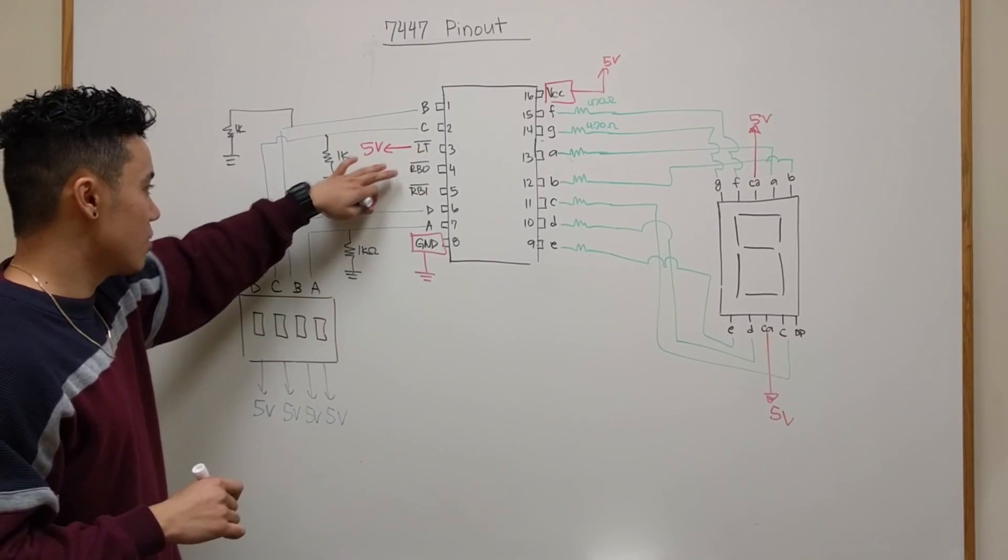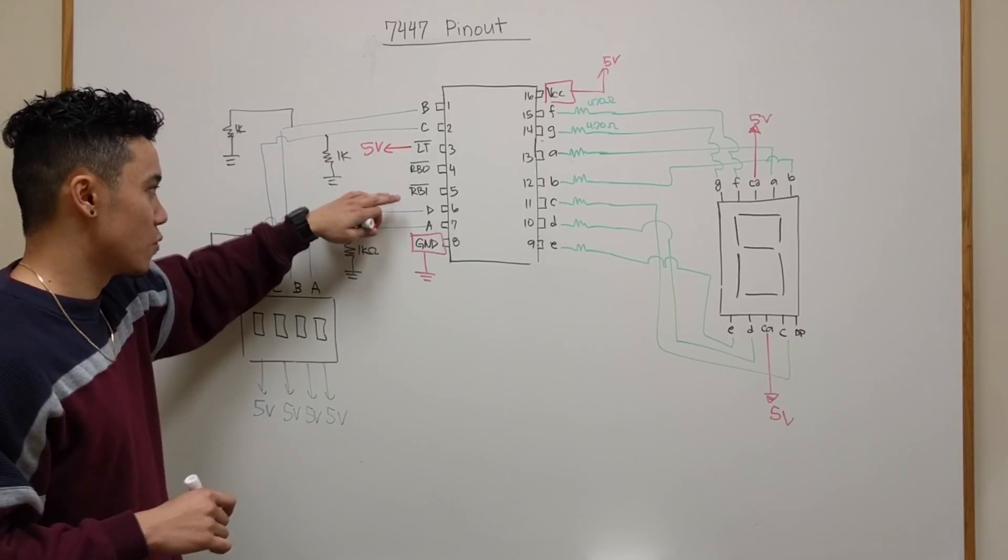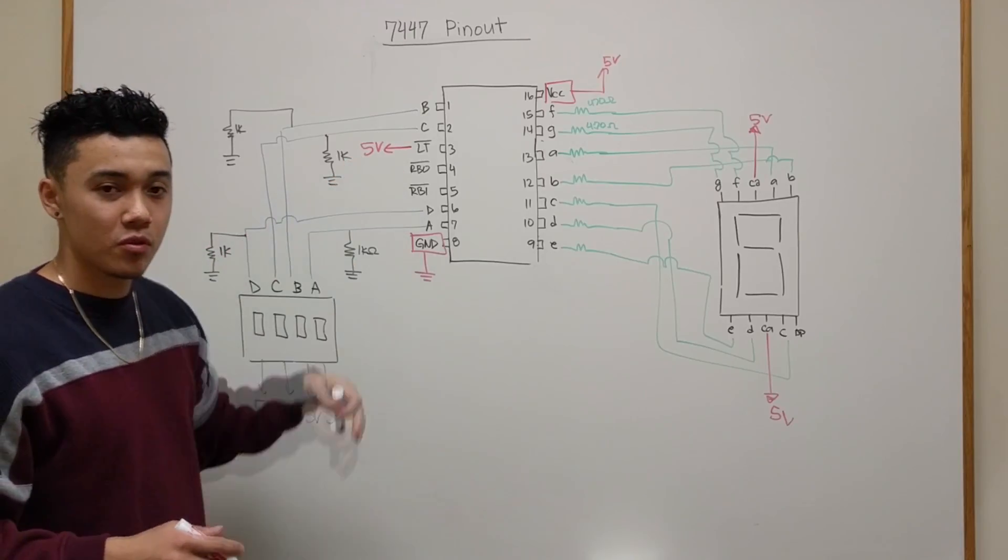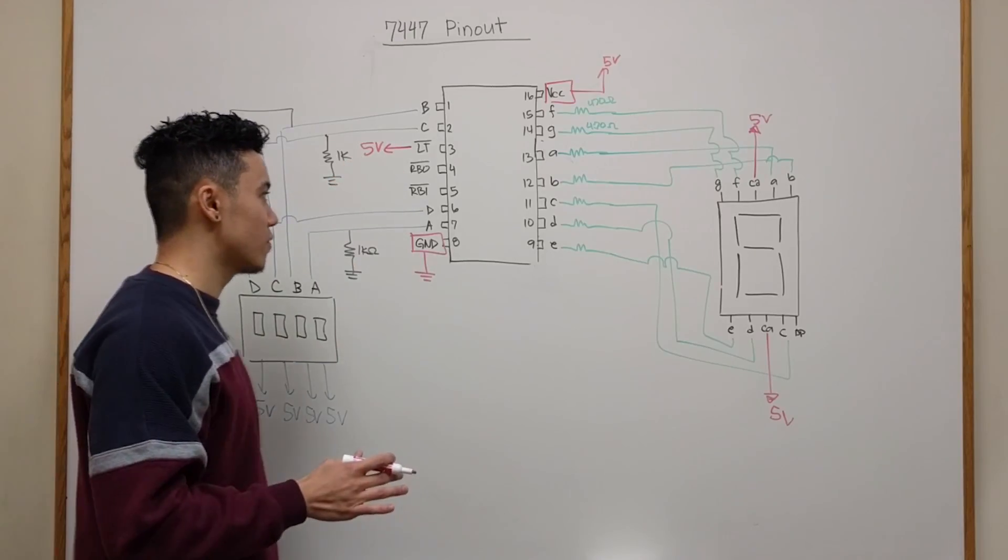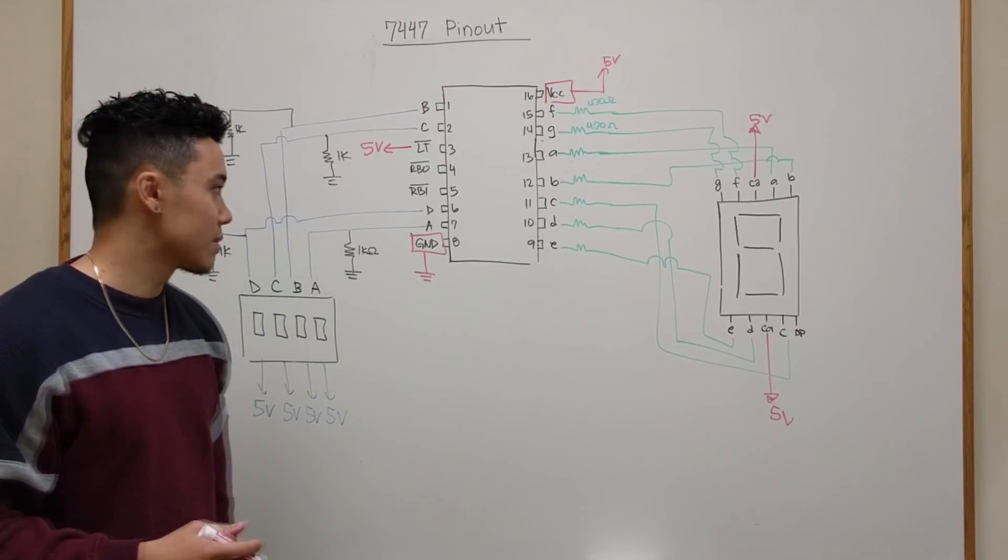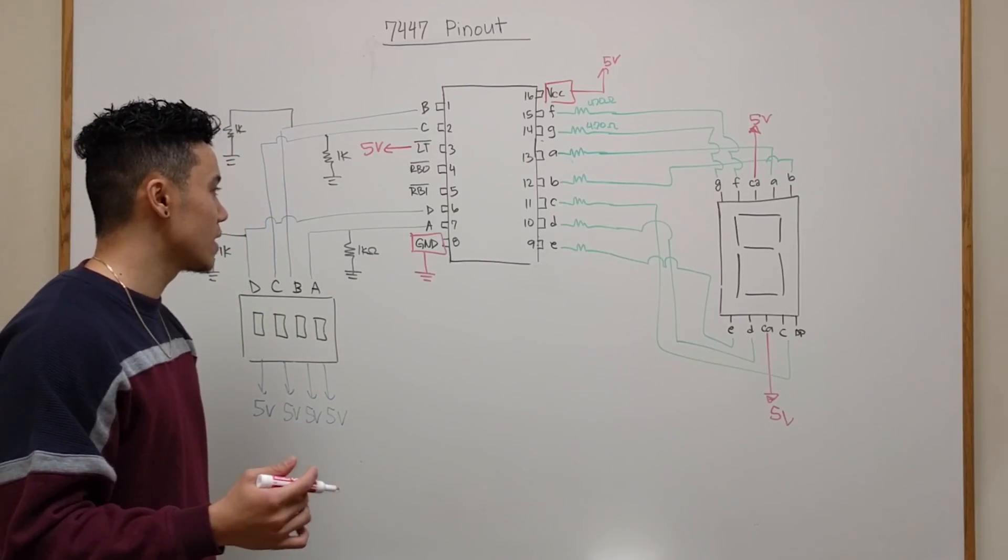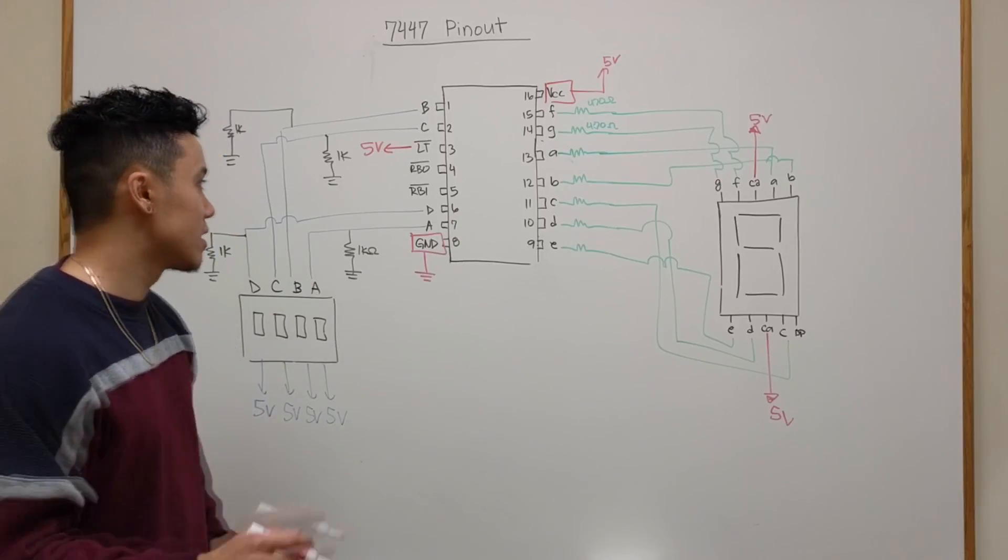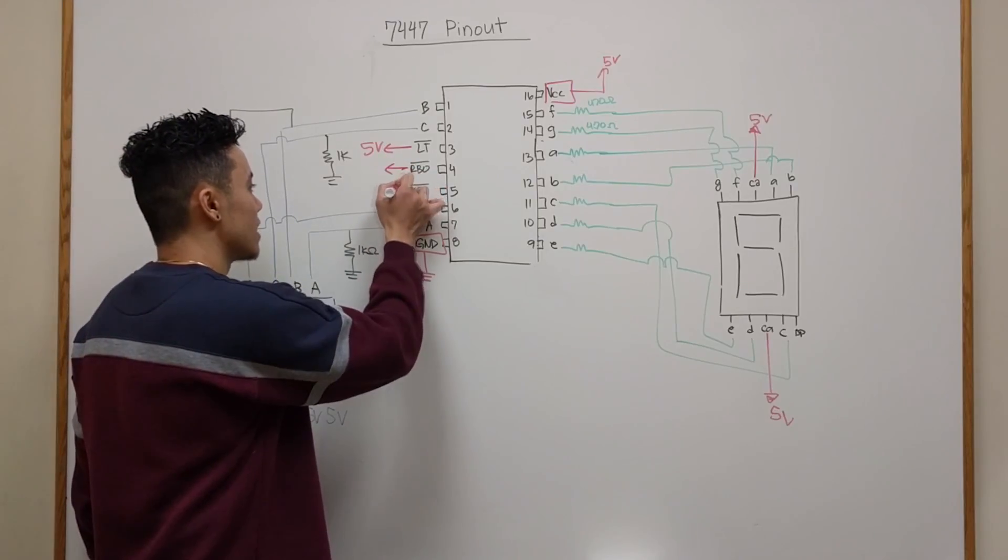RBO and RBI stands for ripple blanking output and ripple blanking input and they're used for if you're working with multiple 7 segment displays. So if you're only working with one display you could just tie both of these to power as well.